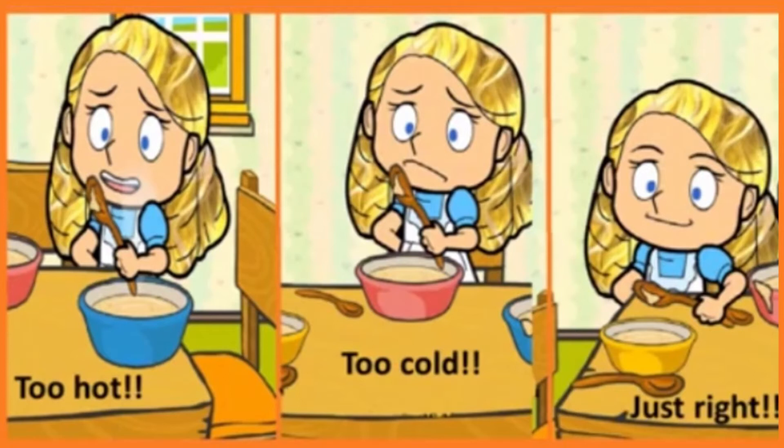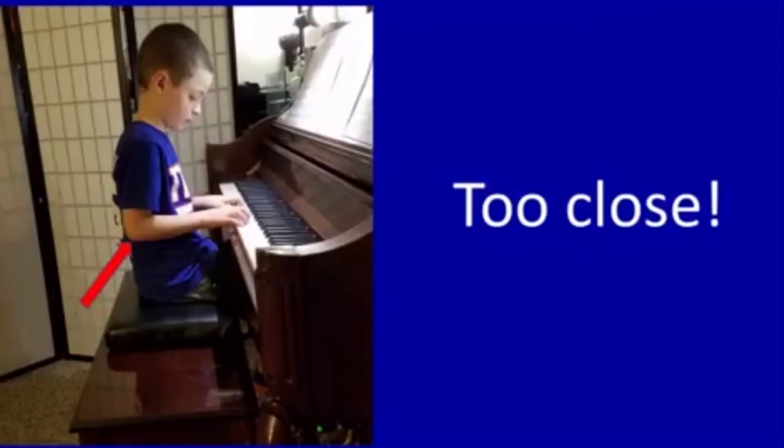First let's talk about how close or how far away from the piano you should be sitting. This is too close. Look where his elbow is. It's almost to his back.